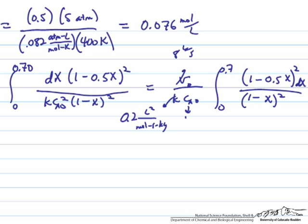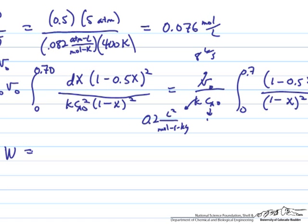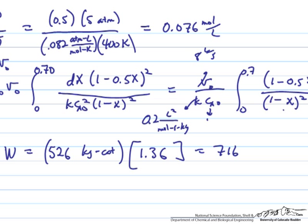If you look at a common integral table, this quantity ends up being—the constant in front ends up being 526 kilograms of catalyst. And then this integrand, if you evaluate it on a calculator as I was lazy and did, ends up being 1.36. You can also find formulas for this in, for example, the book by Fogler or in a common calculus textbook. In this case, the total catalyst mass will end up being 716 kilograms.